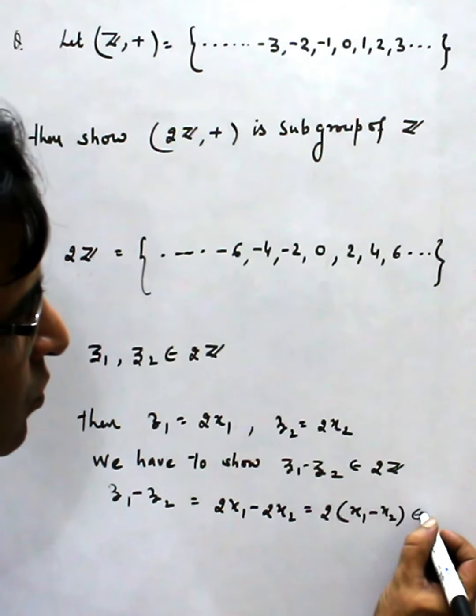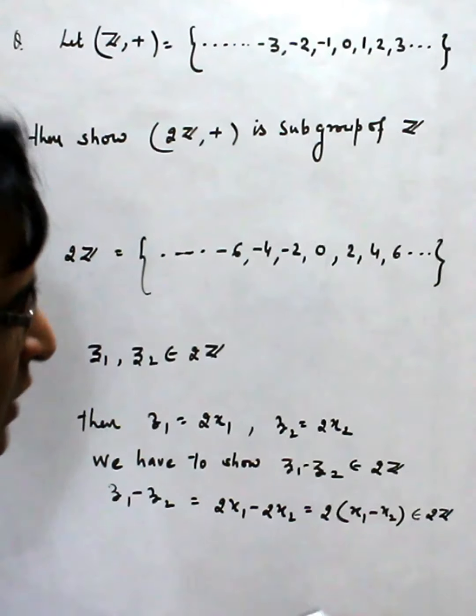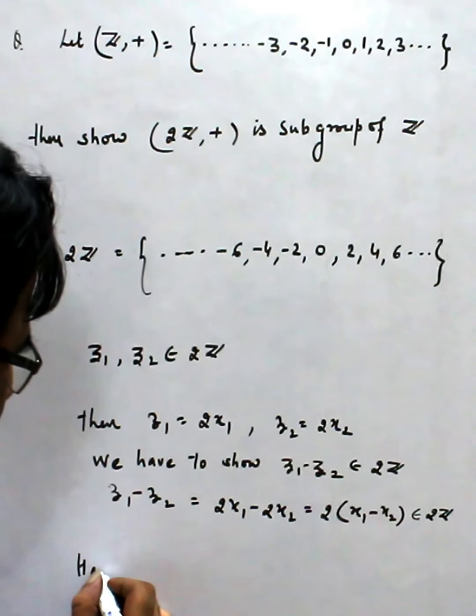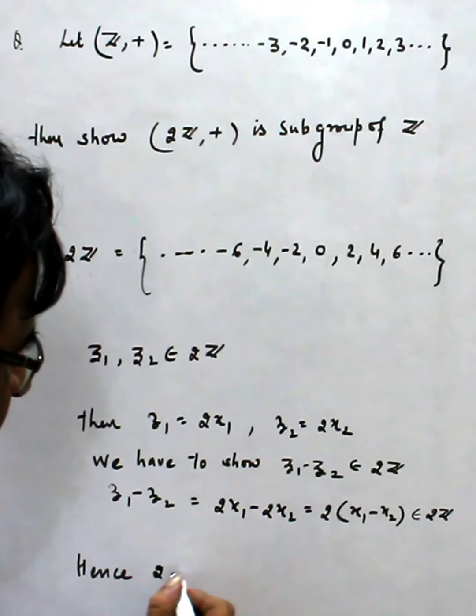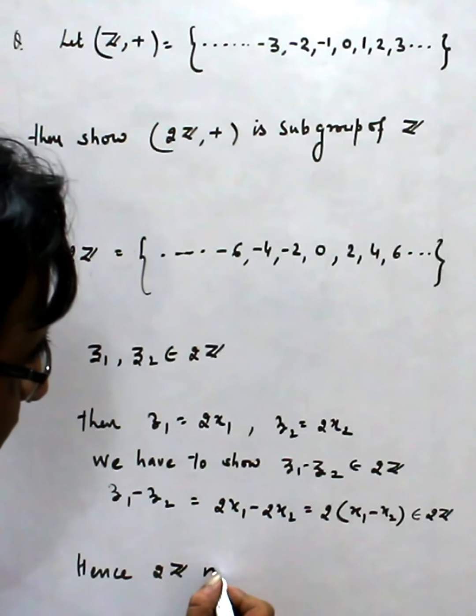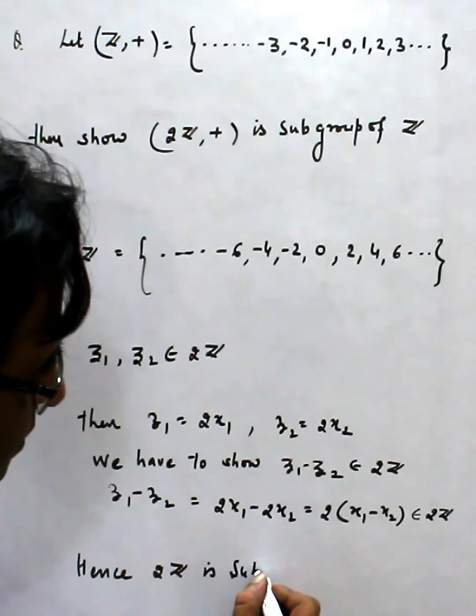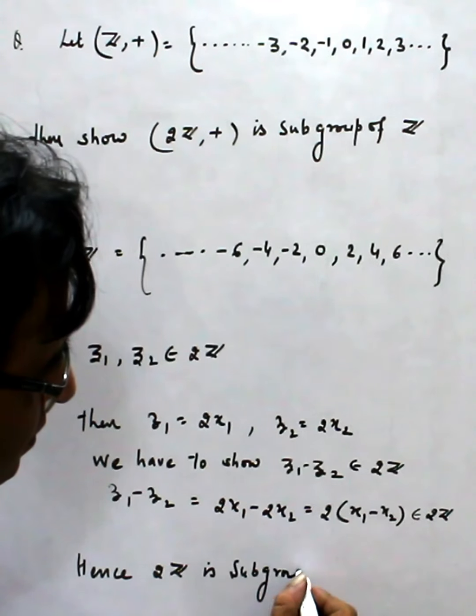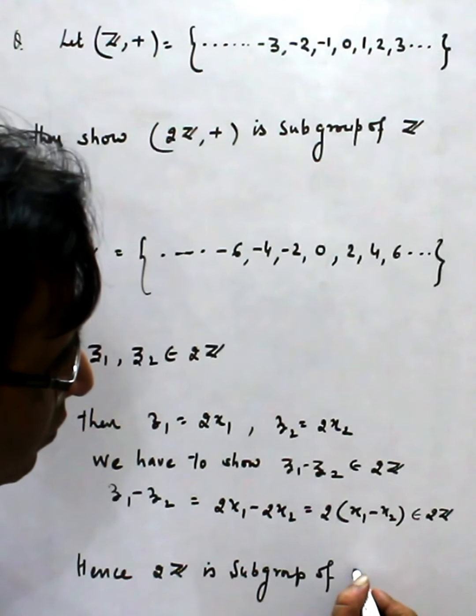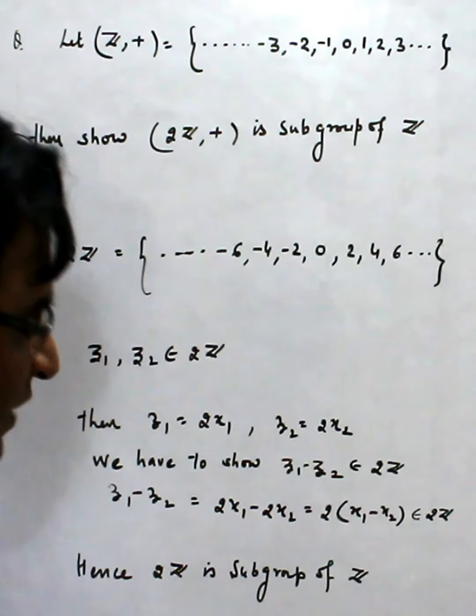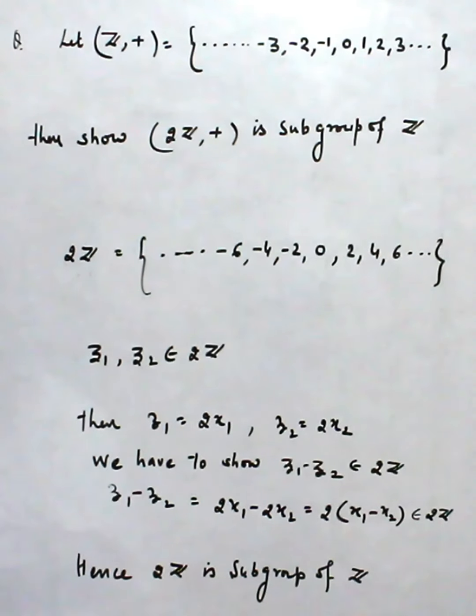Hence, 2Z is a subgroup of Z. Simply we can show. Now, another question.